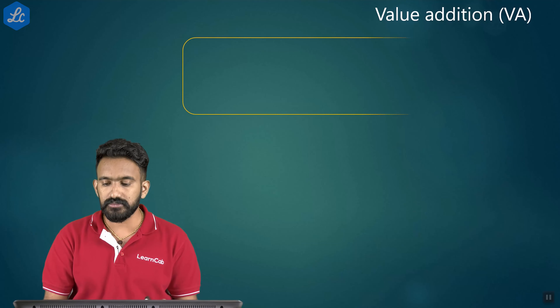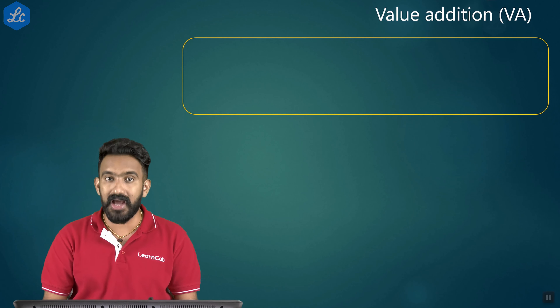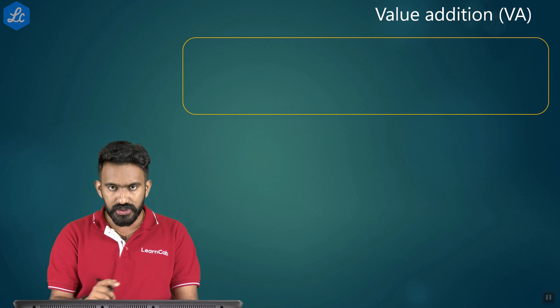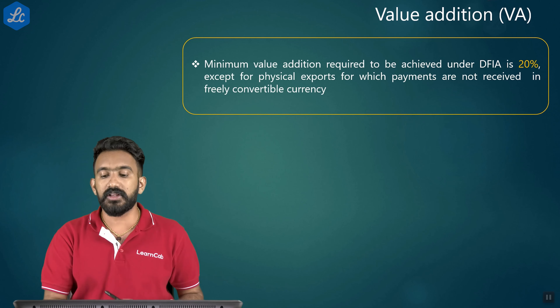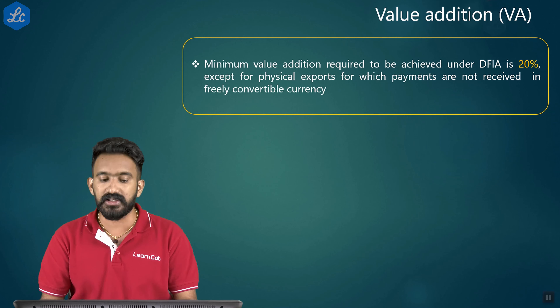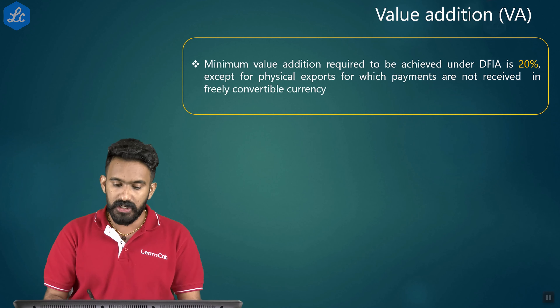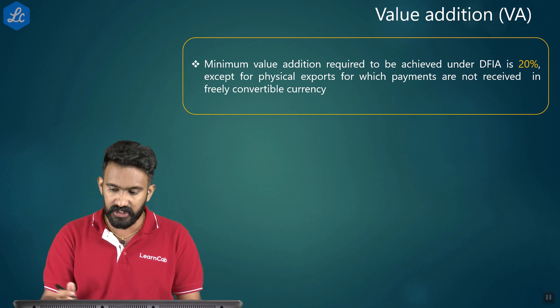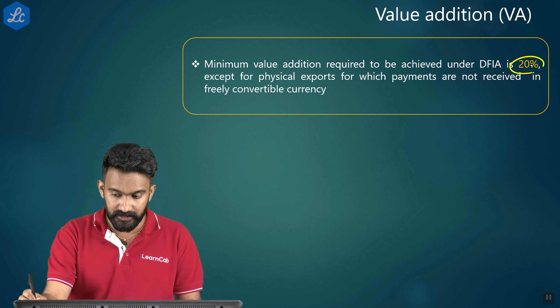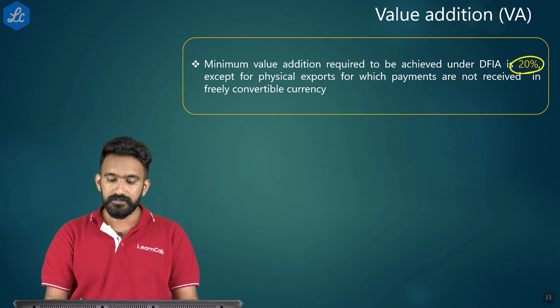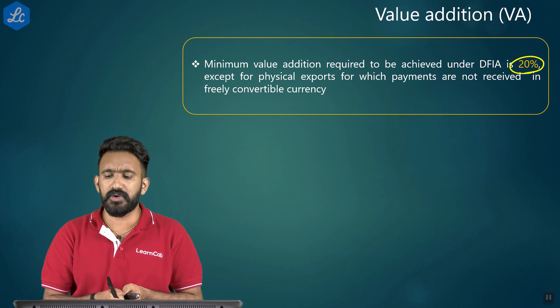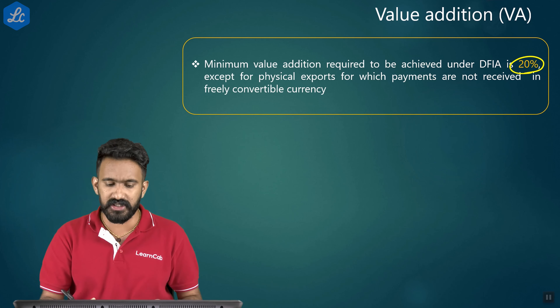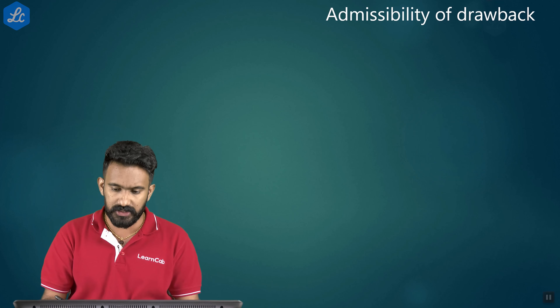Regarding value addition: under Advanced Authorization, 15% value addition is required. For DFIA, the minimum value addition required is 20%, except for physical exports for which payment is not received in freely convertible currency.